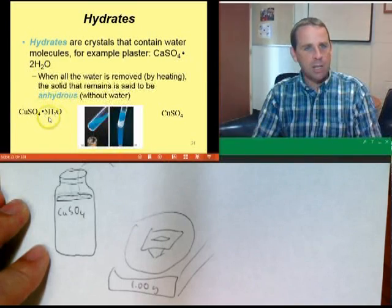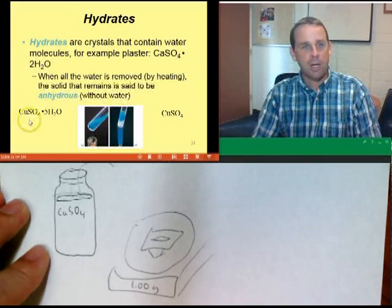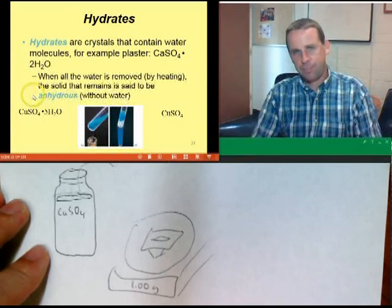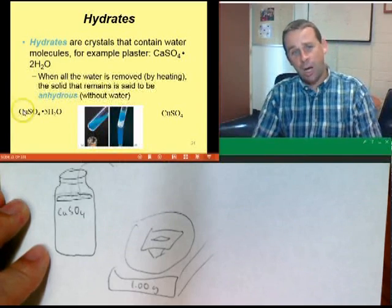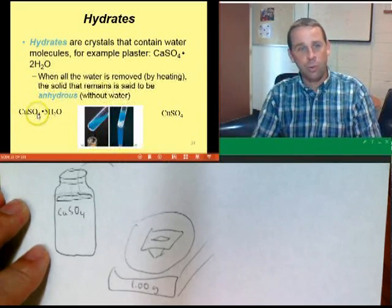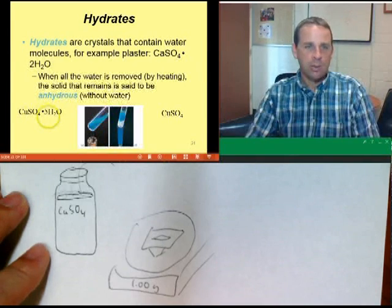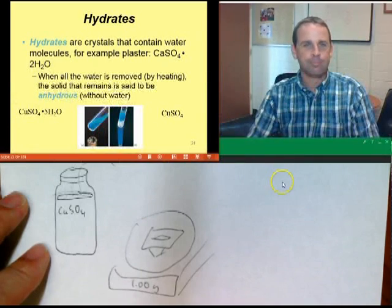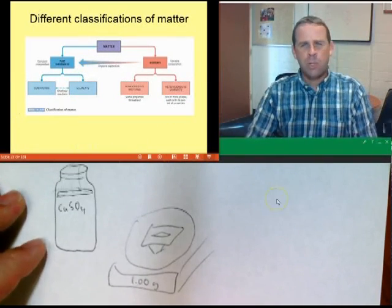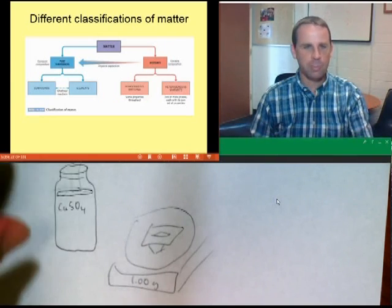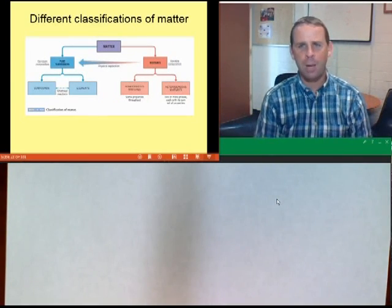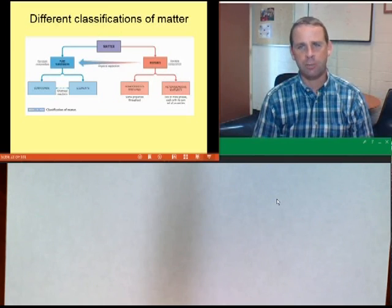Five is how many water molecules there are, and the prefix for five is penta — like pentagon. So this is copper sulfate pentahydrate. You can count the oxygen atoms in the whole unit: there are four from the copper sulfate, plus five from the five water molecules. That's how you name hydrates, and you can count up the number of any atom of interest.